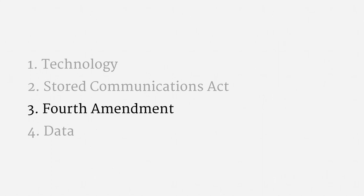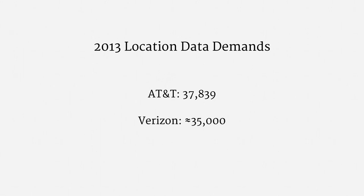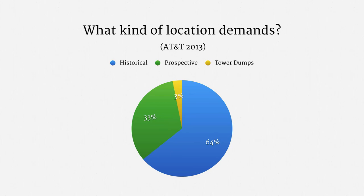The last topic for this lecture is data on cell location information. Both AT&T and Verizon published the number of location data demands they received in 2013 — AT&T was served with over 37,000 and Verizon with about 35,000. Law enforcement agencies are making quite substantial use of cell phone location tracking. AT&T's Transparency Report provides a breakdown of types of location data demands. Historical demands, which we've been discussing, are the most common. Prospective demands, the subject of the next lecture, are hardly rare.